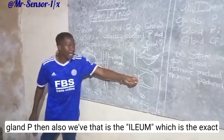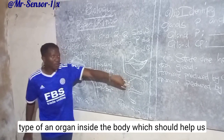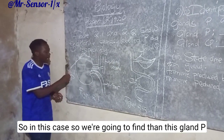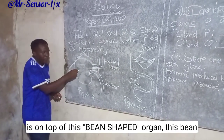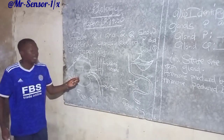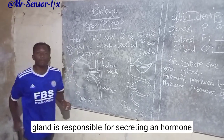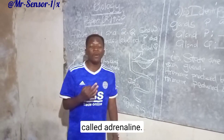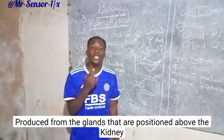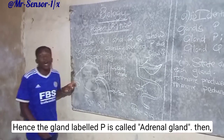We also have the ilium, which is the exact type of organ inside the body that should help us identify gland Q. In this case we are going to find that gland P is on top of this bean-shaped organ. This bean-shaped organ is called a kidney. If this is the kidney, we are going to find that this gland is responsible for secreting a hormone called adrenaline. Adrenaline is a hormone produced from the glands positioned above the kidney. Hence the gland labeled P is called the adrenal gland.